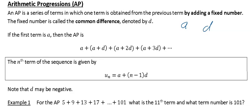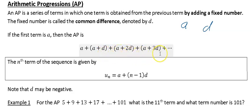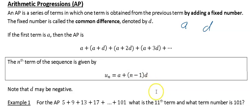Your first term is A, your second term is A plus D, your third term is A plus 2D, your fourth term is A plus 3D, and so on. So your general term is U_N = A + (N − 1)D.